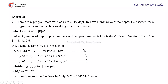Some additional exercises. There are 6 programmers who can assist 10 departments. In how many ways can these departments be assisted by 6 programmers so that each is working at least one department? Here the programmers form set B and the departments form set A. Therefore, |A| = 10 and |B| = 6.